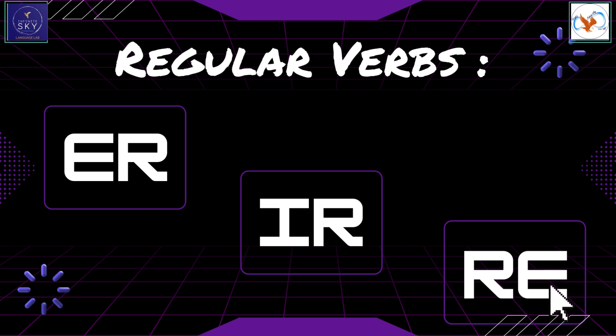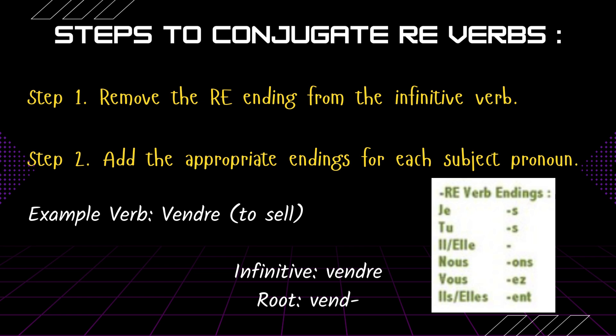Finally, let's talk about RE ending verbs. These verbs also have their unique conjugation pattern. Just like ER and IR ending verbs, remove the RE ending from the infinitive verb and add the appropriate endings according to the subject pronoun. For je, add -s. For tu, again it is -s. For il and elle, there is no ending at all. For nous, it is -ons. For vous, it is -ez. And for ils and elles, it is -ent.